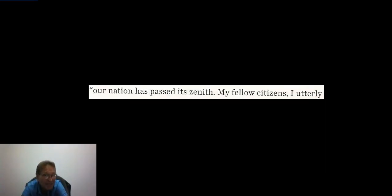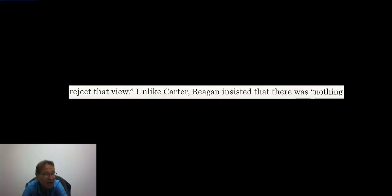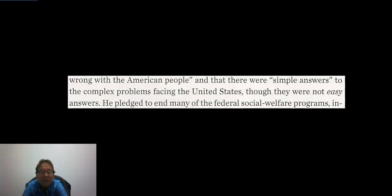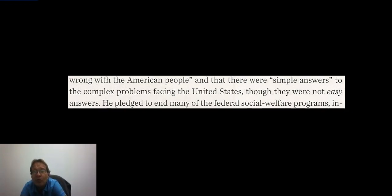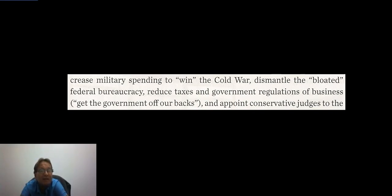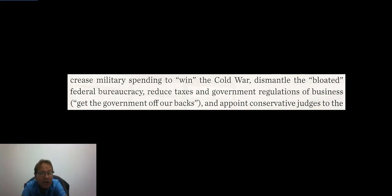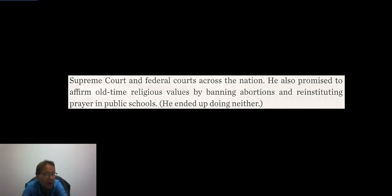Reagan claimed Carter kept saying that our nation had passed its zenith, but Reagan utterly rejected that view. Unlike Carter, Reagan insisted there was nothing wrong with the American people and that there were simple — though not easy — answers to the complex problems facing the United States. He pledged to end many federal social welfare programs, increase military spending to win the Cold War, dismantle the bloated federal bureaucracy, reduce taxes and government regulations, and appoint conservative judges to the Supreme Court and federal courts across the nation.